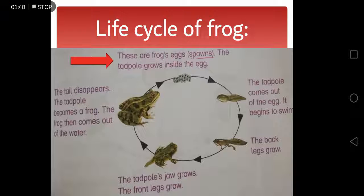In the last step the tail disappears and the tadpole becomes a frog. The frog then comes out of the water and starts living its life. This adult frog then lays eggs and the life cycle of the frog continues.